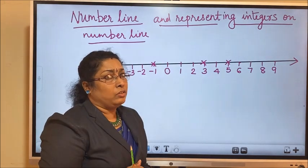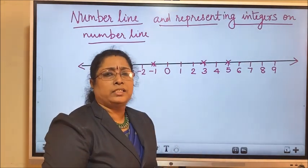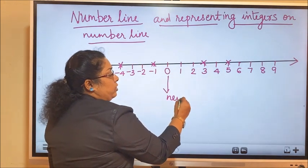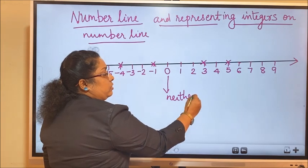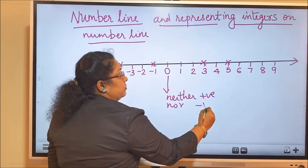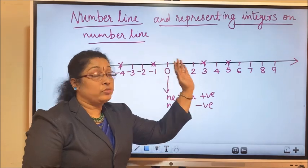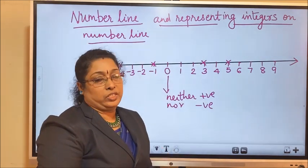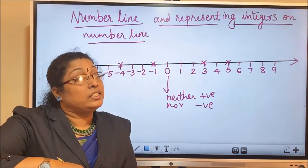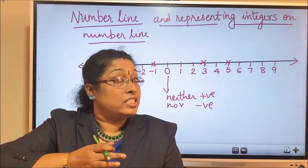Now, are you thinking what is the sign of 0? This poor 0 does not have any sign. The 0 is neither positive nor negative. So 0 does not have any sign. Right of 0 are positive integers, and left of 0 are negative integers. Hope all of you understood how to represent integers on a number line. Now let's move to the next topic.